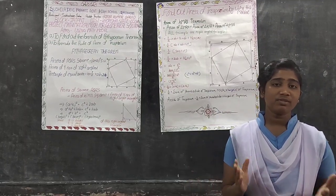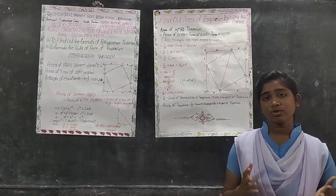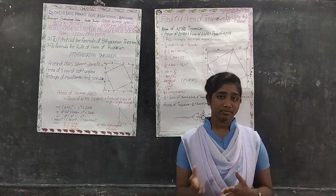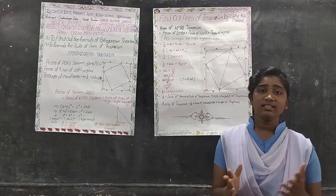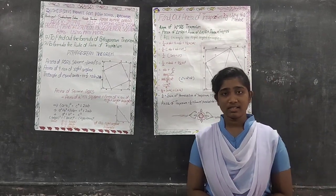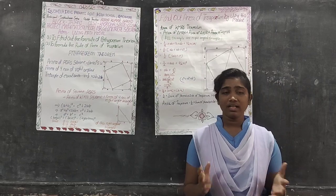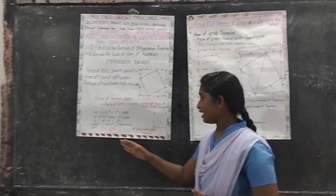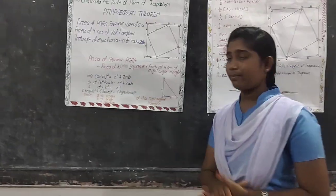The statement of this very common theorem is that the sum of the square of the base and the sum of the square of the height is equal to the sum of the square of the hypotenuse. That is, A squared plus B squared equals C squared. A is the height, B is the base, and C is the hypotenuse.